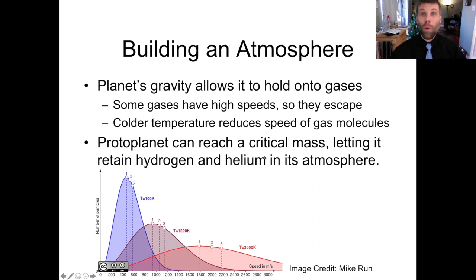As you get a more and more massive protoplanet, and you build up the gravity of that protoplanet, you allow it to more easily hold on to gases. Some gases have high speeds, so they escape. These are gases with low molecular weights or high temperatures. As you reduce temperatures, you start moving the gas molecules around more slowly, making it harder for them to escape, and making it easier to retain the atmosphere that a planet is trying to build.